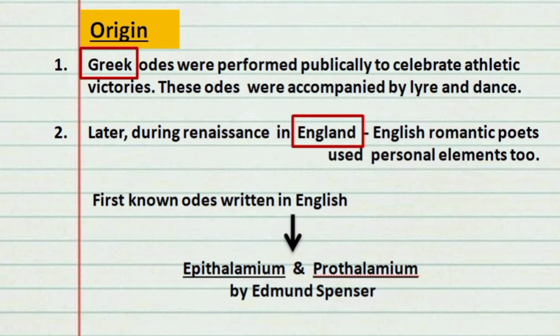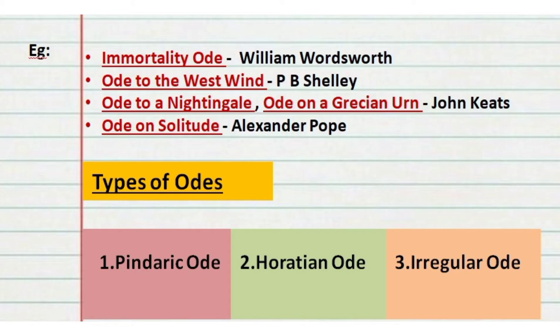Before moving into the types of odes, let's see how odes originated. It was in Greece that poets started writing odes — to congratulate their heroes and the winners of competitions. Originally, odes were written to celebrate victories and were performed in public, accompanied by the lyre, a musical instrument, and dance. Later, the English Romantic poets started writing odes during the Renaissance, and the first known odes written in English were Spenser's Prothalamion and Epithalamion.